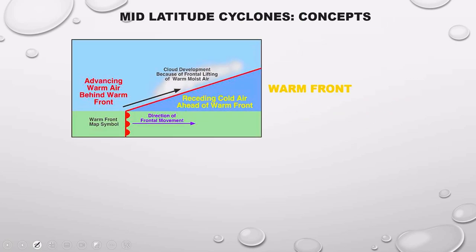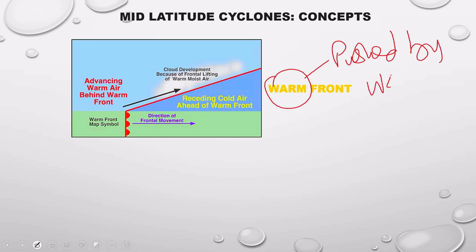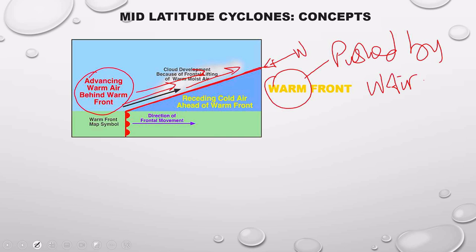We will start with the warm front. Remember that the warm front is called a warm front because it is pushed by warm air. That's the reason. So the warm front in this case is that red line there. Pushed by warm air — there's warm air behind the warm front advancing. It is the warm air that pushes the warm front, hence it is called a warm front.